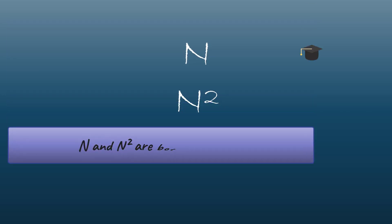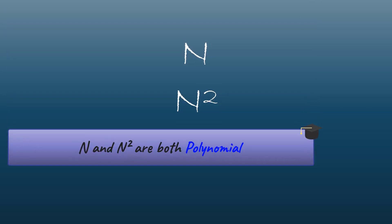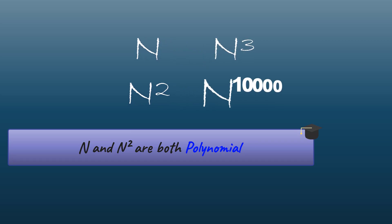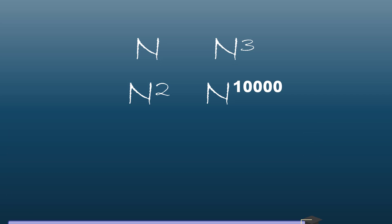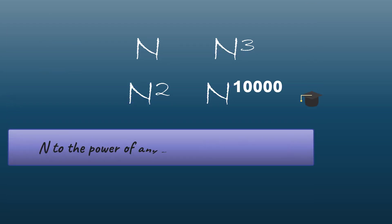Mathematically, both n and n-squared are considered polynomial, as is n-cubed or even n to the 10,000. Any n raised to a constant exponent is polynomial. This will come up later when we talk about unreasonable execution times.